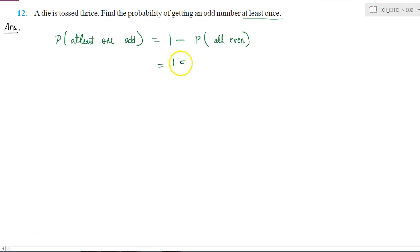So this I can write as this is equal to one minus probability of even in first throw into probability of even in second throw into probability of even in third throw, because all three throws are independent of each other.